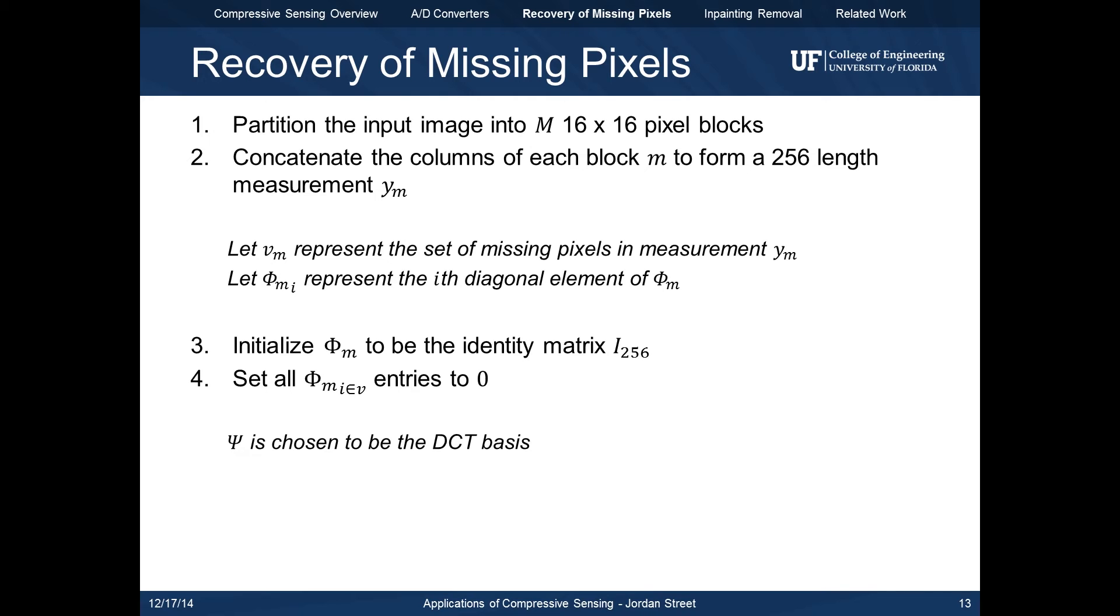We first partition the image into 16 by 16 pixel blocks. The columns of each block are then concatenated to form a 256 element long measurement. The sensing matrix is initialized to be the identity matrix, and then any diagonal elements of that matrix corresponding to missing pixels are set to zero.